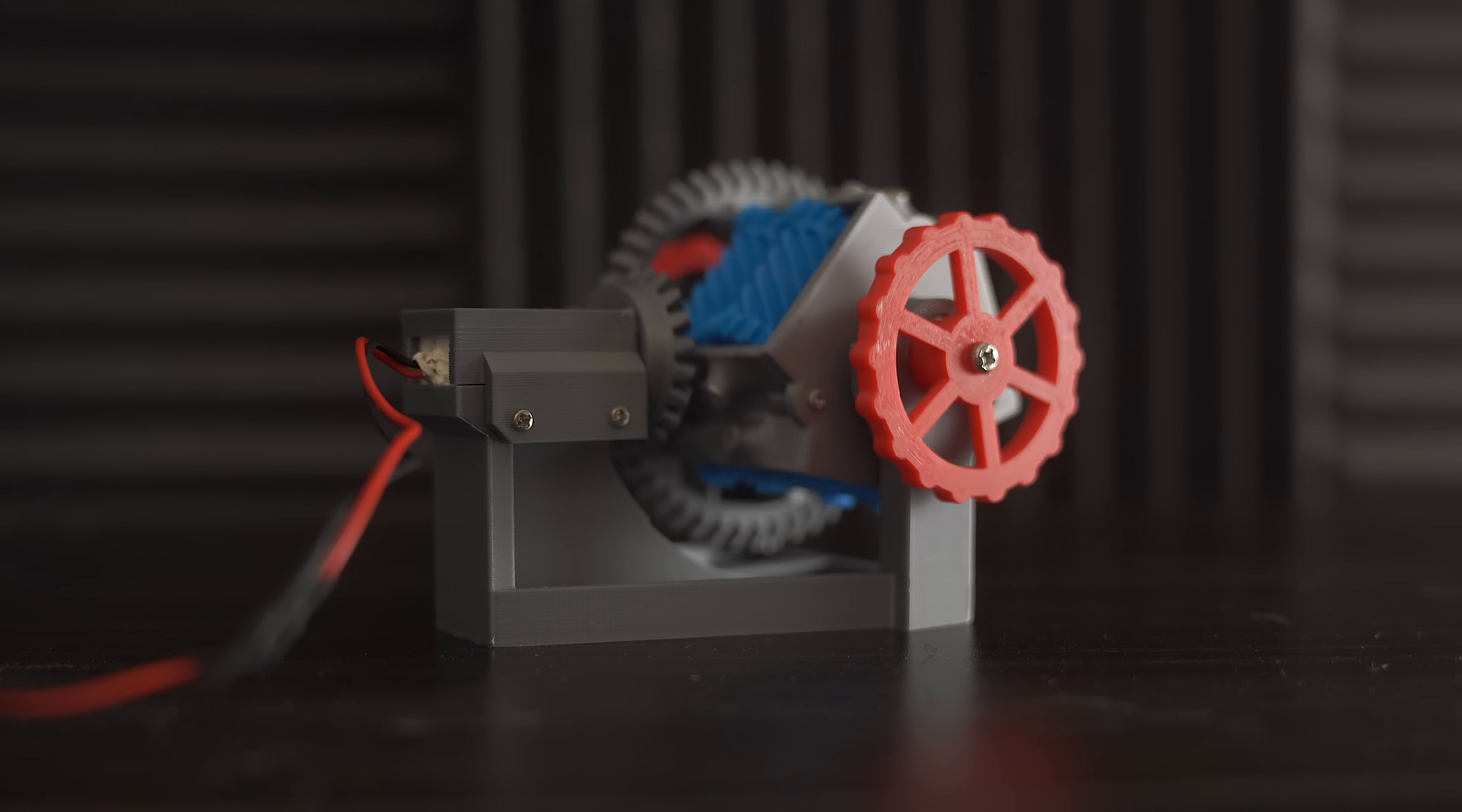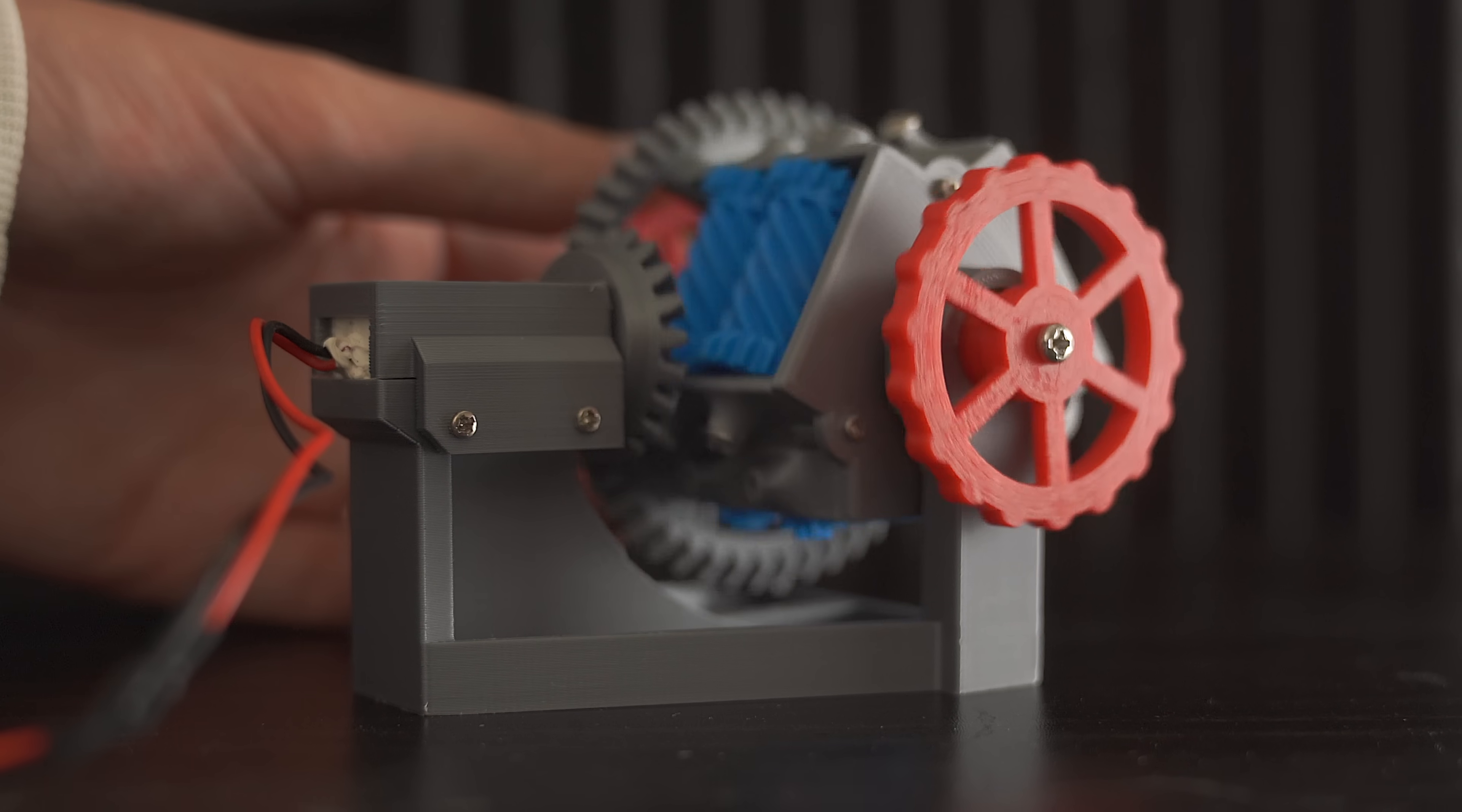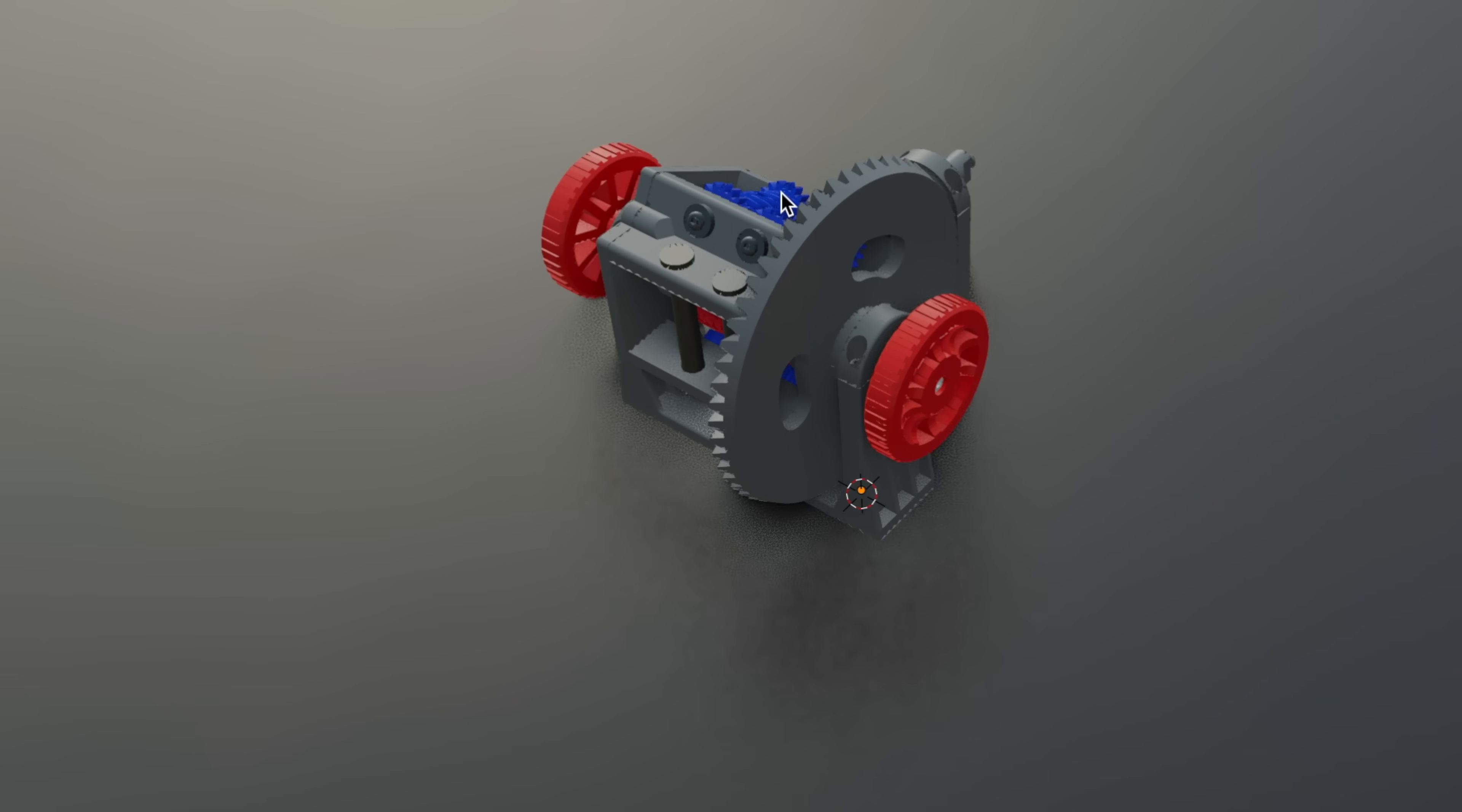So how does this work? You can see here when I stop one wheel, the other wheel starts to spin faster. And you can see the blue helical gears inside spinning. Let's take a look inside this mechanism to see how it works.